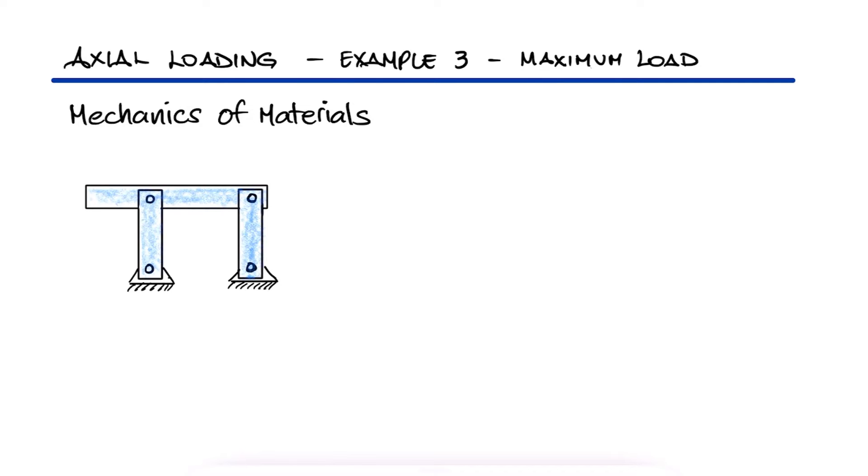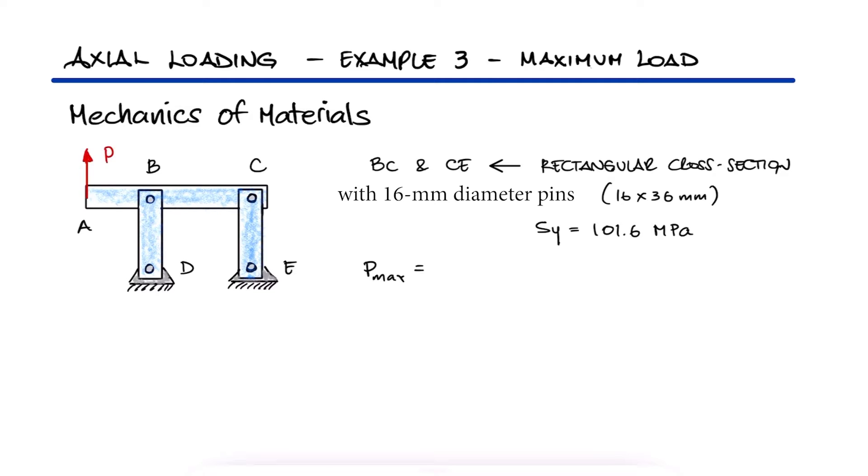Each of the two vertical links in the figure has a 16 by 36 millimeter uniform rectangular cross-section and they are both made of a material with a yield strength of 101.6 megapascals. What is the maximum vertical load that can be applied at A so that neither link deforms plastically?